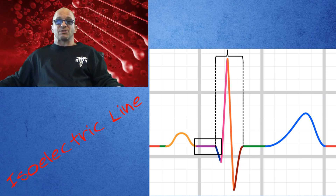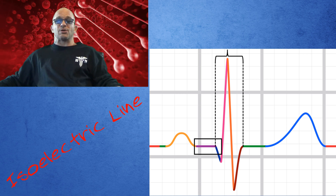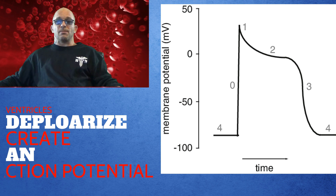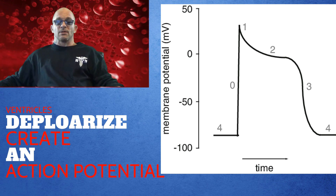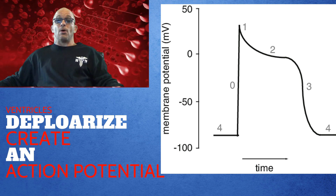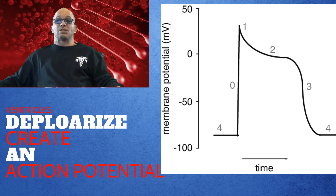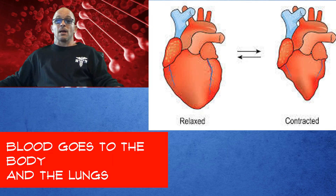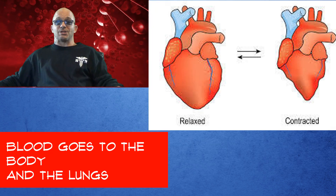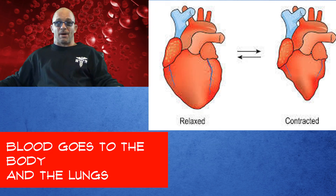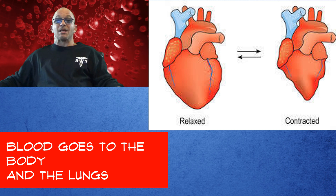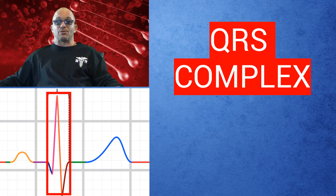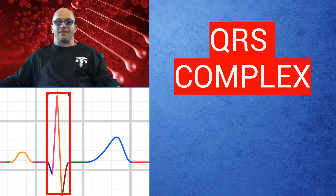The isoelectric line returns briefly, and the ventricles become depolarized, creating their own action potential, which allows them to contract, and blood is forced out to the lungs and the body. The QRS complex forms the waves representing this state.